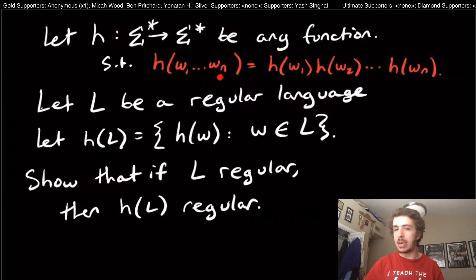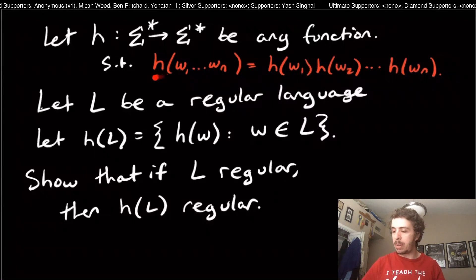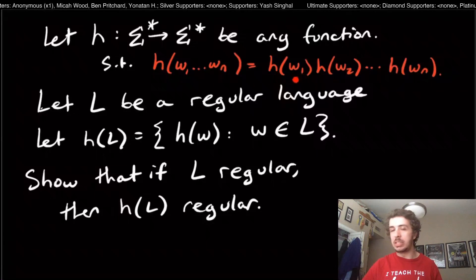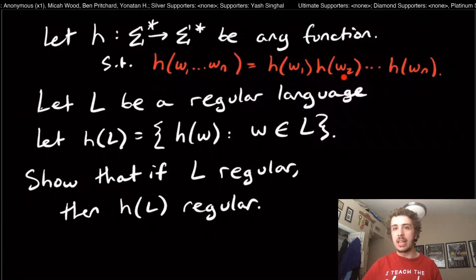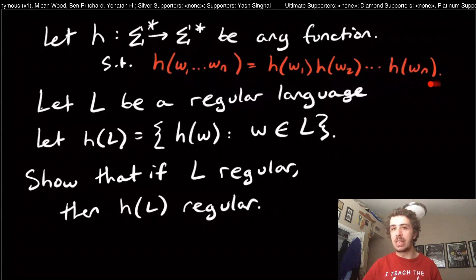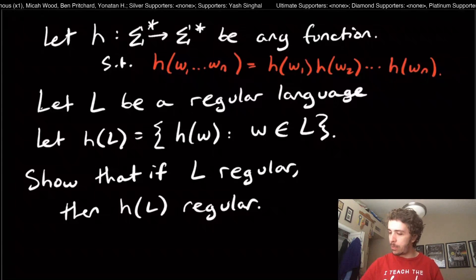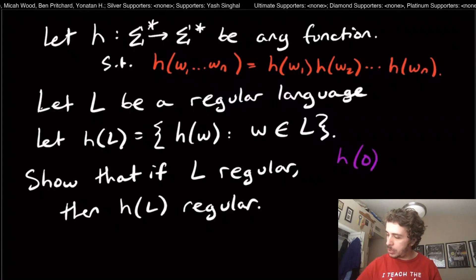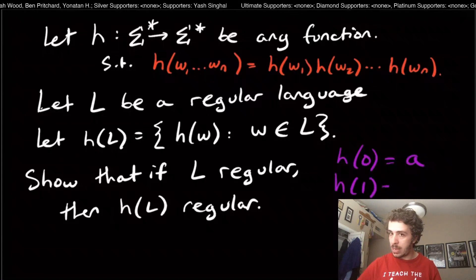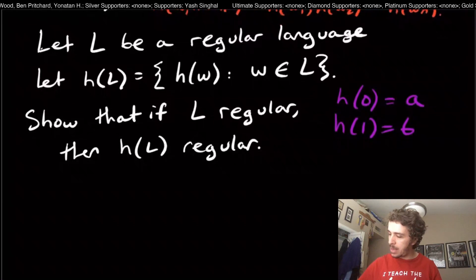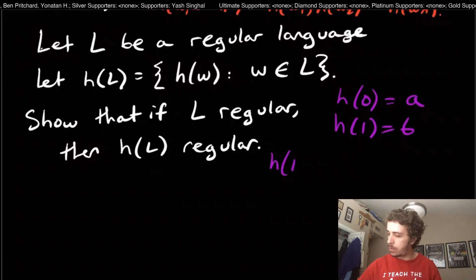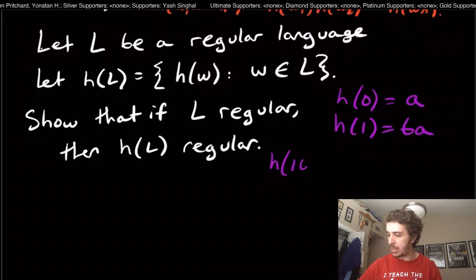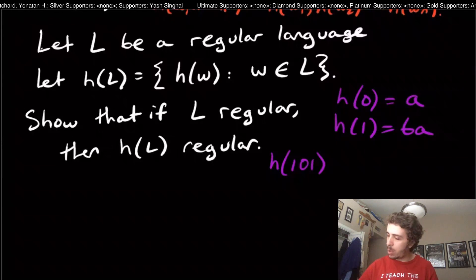The restriction is: if we have a string w₁ through wₙ and we apply H to it, that equals applying H to a single character and then concatenating all the other H's together. For example, say H(0) = a and H(1) = BA. If we want to know H(101), by this property that's H(1) concatenated with H(0) concatenated with H(1).